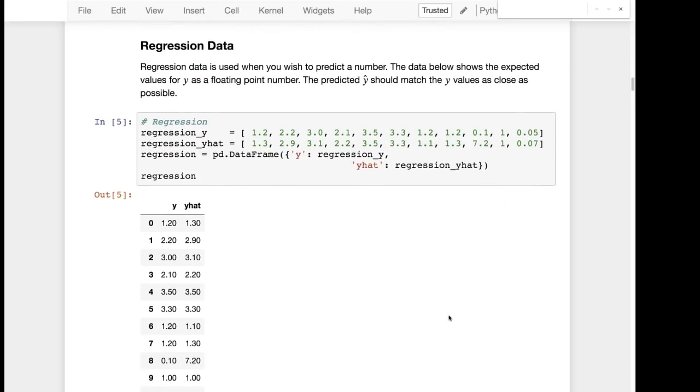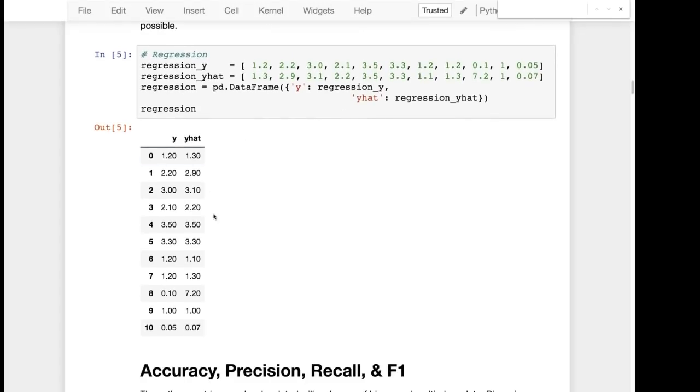Then our regression data. So the last two are classification data. This is our regression data. These are numeric y's and then the y hats are the predicted values. And ideally these would line up perfectly but they don't. So that's what the error is evaluating.